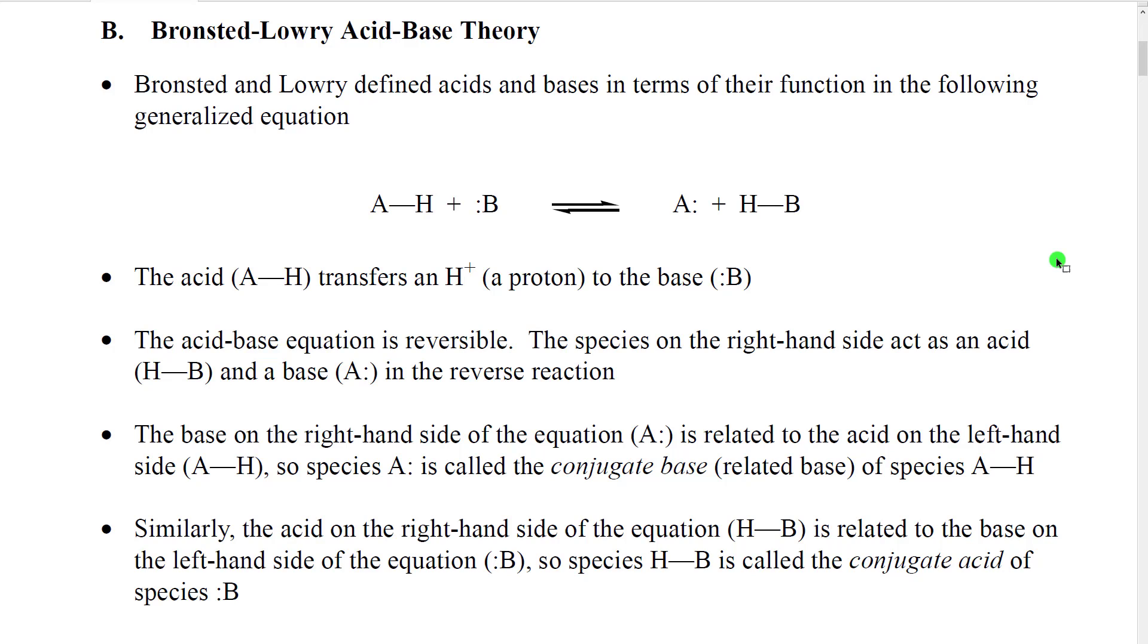Right around 1920, a new theory of acid bases emerged. It was defined by the scientists Bronsted and Lowry and so it has been called the Bronsted-Lowry acid base theory. Bronsted and Lowry defined acids and bases in terms of how they are functioning in chemical reactions using this generalized equation. This is called the Bronsted-Lowry acid base equilibrium equation. In it, they defined that acids reacted with bases. An acid in this equation is represented as A with a hydrogen attached and a base is represented as a substance that has a lone pair of electrons.